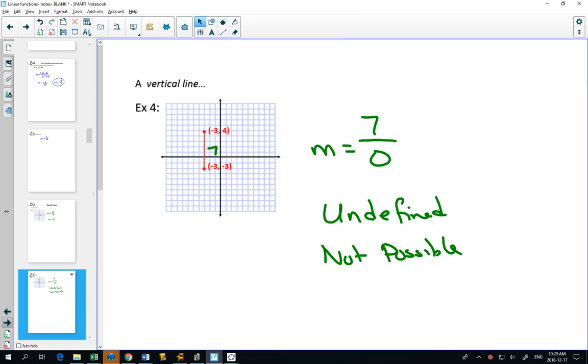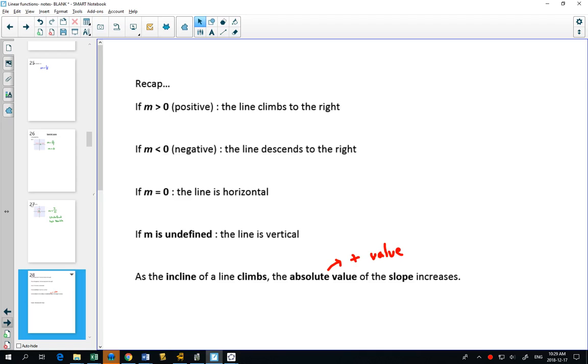So to summarize what we've seen so far, if we have a positive slope, the line climbs to the right. So we can just draw a picture. That would have a positive slope. If we have a negative slope, then it goes down from left to right. That line has a negative slope. If the slope is 0, it's horizontal. If the slope is undefined, it goes straight up and down.